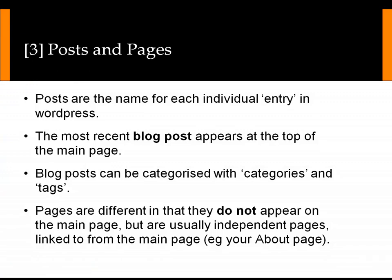Okay, the next thing I want to do is look at posts and pages. A post is the name for each individual entry in WordPress. If you think of a blog, each of those dated entries is a blog post, and in the tradition of most blogs the most recent post appears at the top of the main page. It is possible to categorize blog posts using categories or tags. Pages are different in that they do not appear on the main page of your blog — they are a separate independent page that is not dated and they usually appear accessible in a different way.